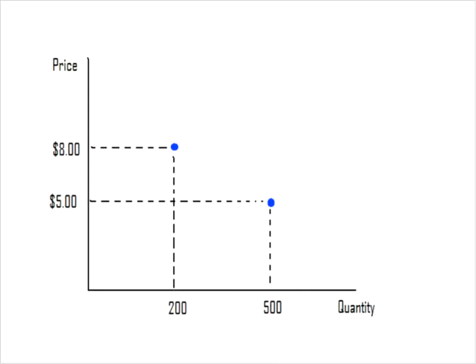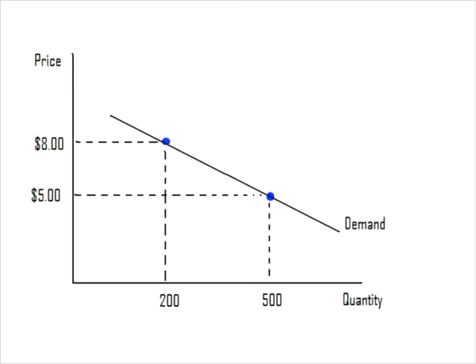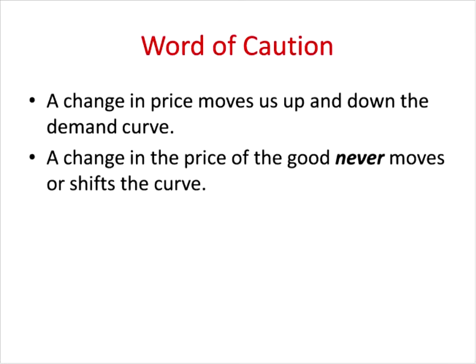It seems possible that we could draw a straight line through these two points, so you go ahead and do that. That line is what we call a demand curve or a demand schedule. Demand curves are always downward sloping because they are simply illustrating the law of demand. A change in price moves us along the demand curve and never shifts the curve — we assume price is all that is changing, holding everything else constant.